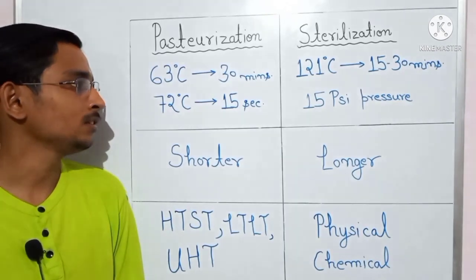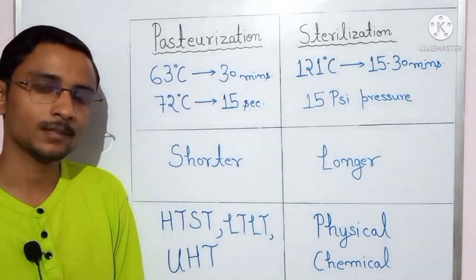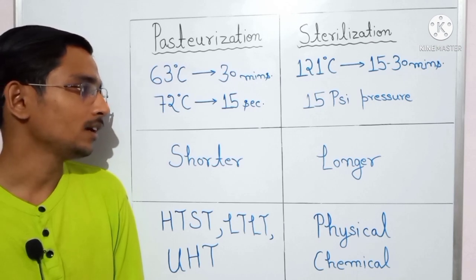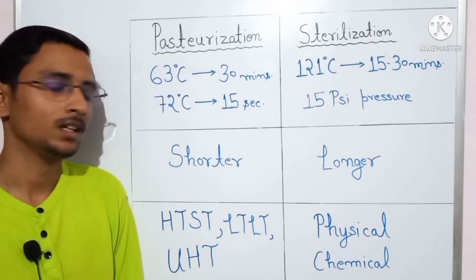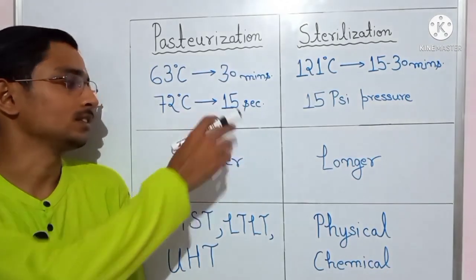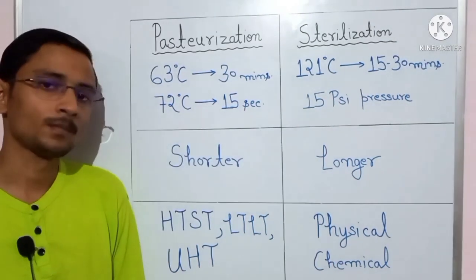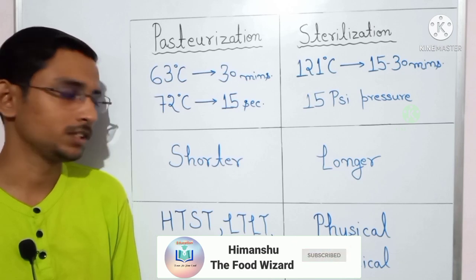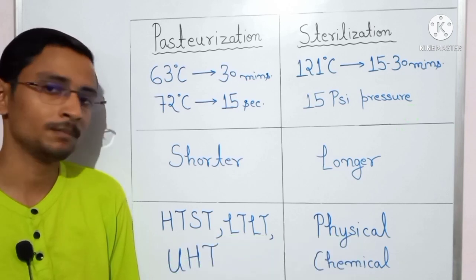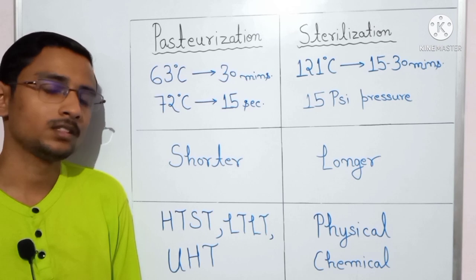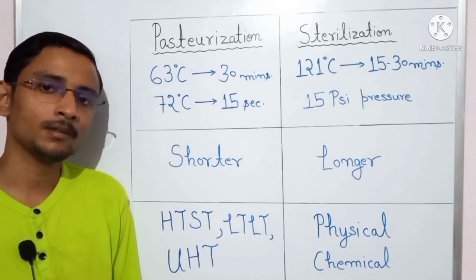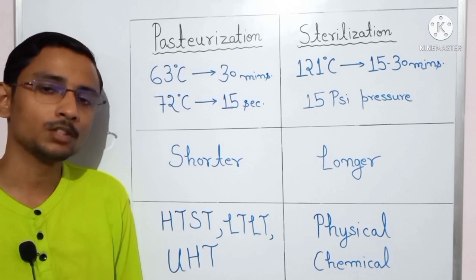Sterilization is normally performed at 121 degrees Celsius for 15 to 30 minutes at a pressure of 15 PSI — though time and temperature can vary. Regarding shelf life, pasteurization gives a very short shelf life as compared to sterilization, whereas sterilized products have a longer shelf life — you can store sterilized products in your refrigerator for at least one week.